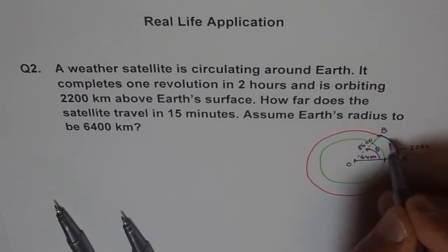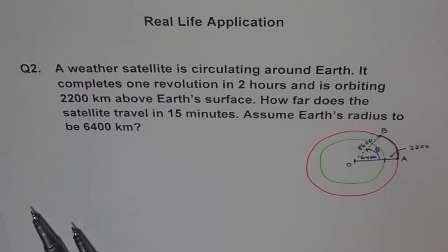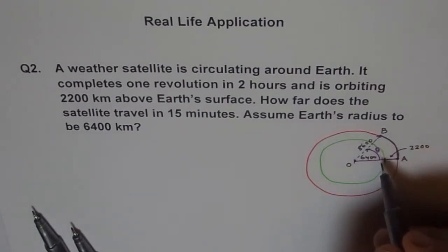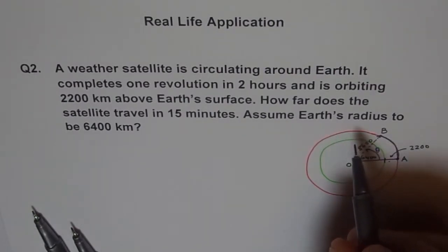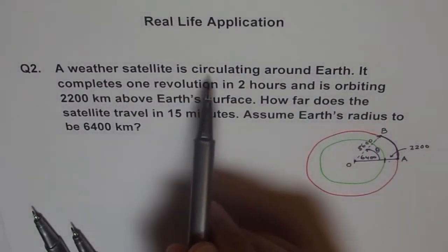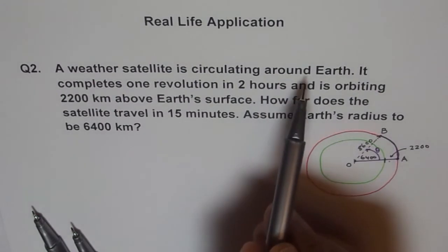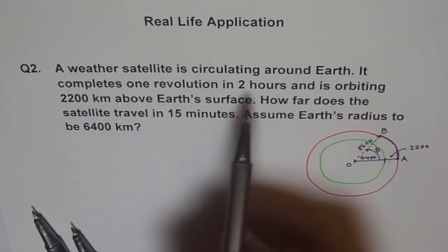Then we know r theta is the arc length, right? So from A to B, correct? So that is what we know. Now how are we going to find this theta? We can find this by the orbiting speed. It says what? So the satellite is circulating around Earth, it completes one revolution in two hours.